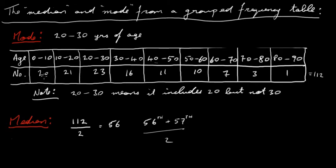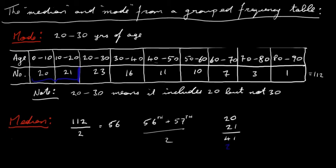So let's have a look. Starting here, we have 20 people between 0 and 10 years of age. Now going up here, we've got 21 people between 10 and 20 years of age. That gives me a total of 41. So adding those two together, you've got 41 people. Looking at just these two groups, we're looking at people between 0 and 20 years of age, and we've looked at 41 people. We haven't reached the 56th person yet.